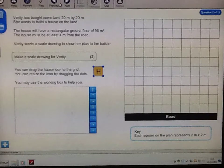The house will have a rectangular ground floor of 96m². The house must be at least 4m from the road.